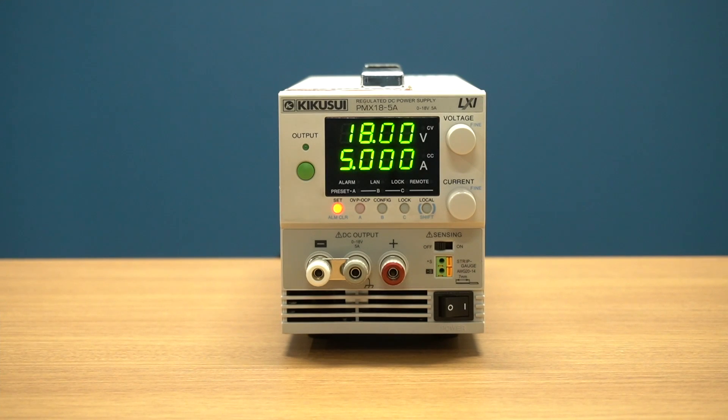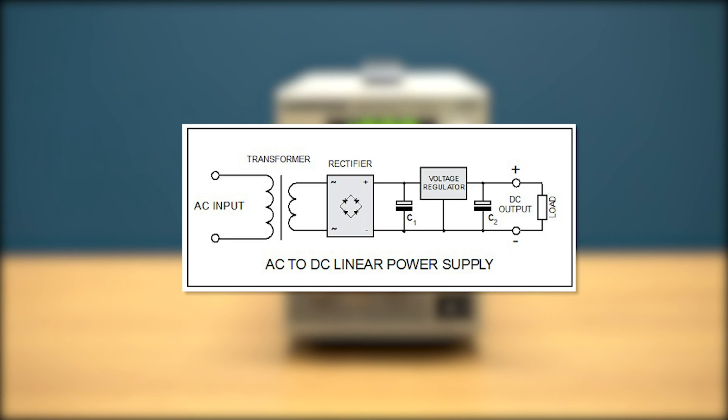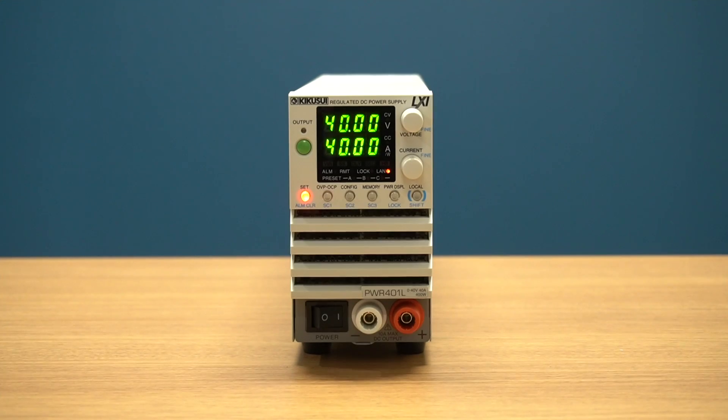Linear power supplies, like the PMXA, utilize a transformer to drop voltage from the AC line to a much lower AC voltage, then use a series of rectifier circuitry and filtering processes to produce a very clean DC voltage.